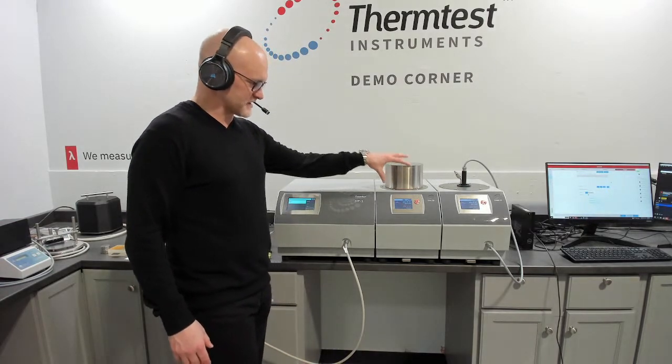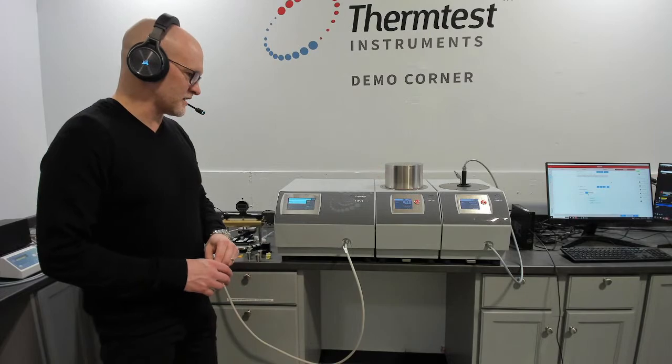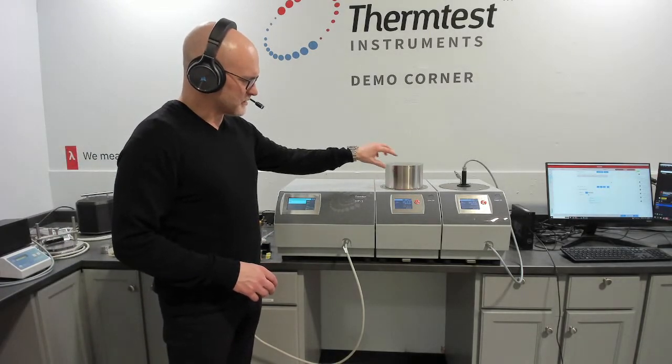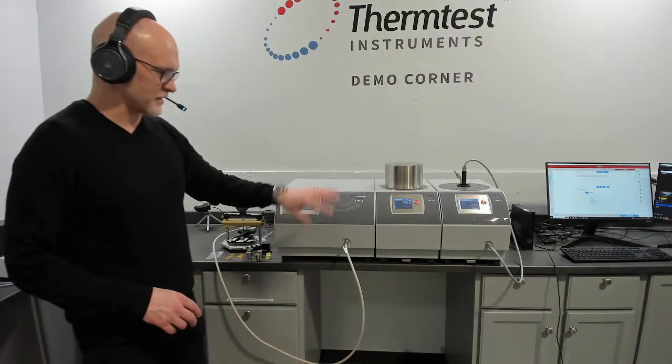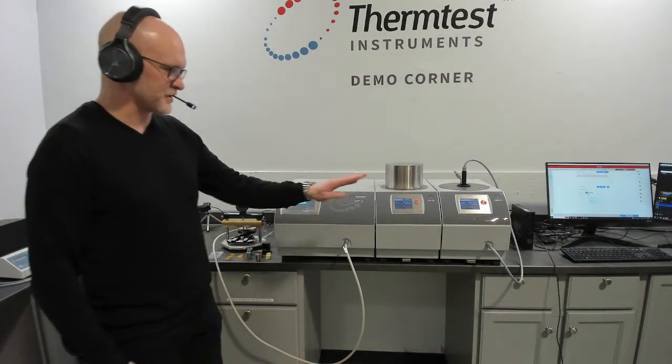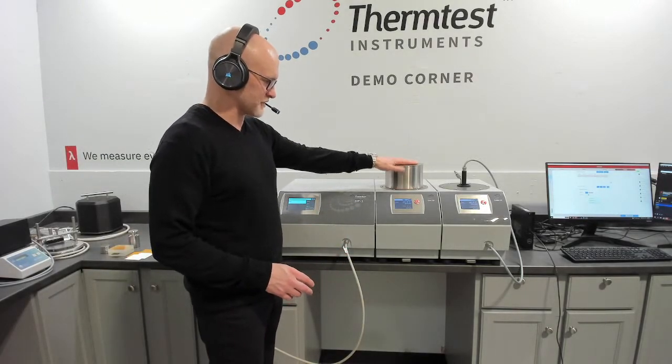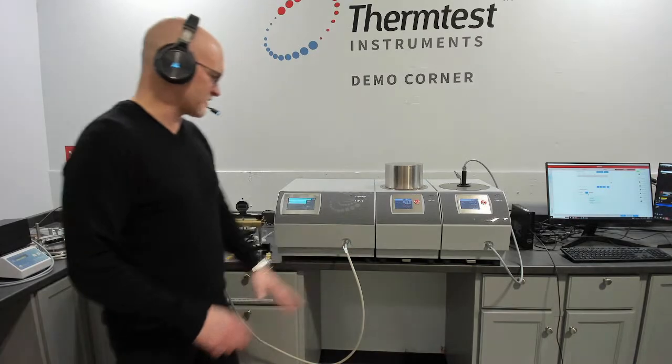We have available cells that can be used inside of here for testing liquids, pastes, and powders. Both of these have the ability to go down to cryogenic if it's needed and a couple other low temperature versions as well. So the overall temperature, depending on configuration, is 300 Celsius down to cryogenic depending on the configuration.